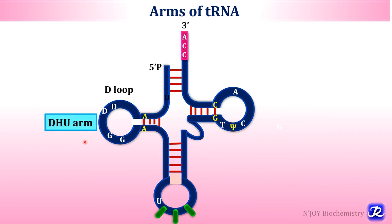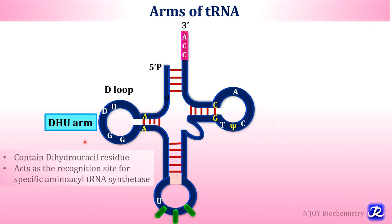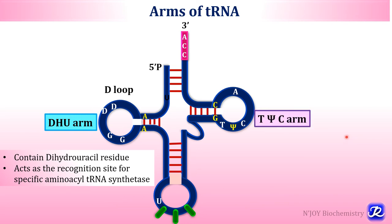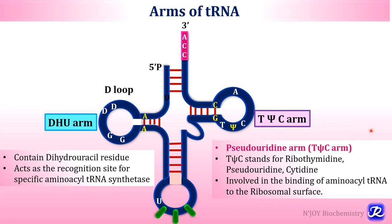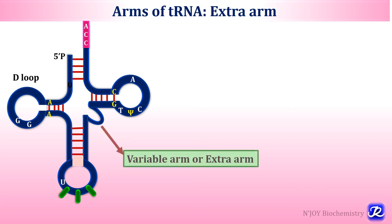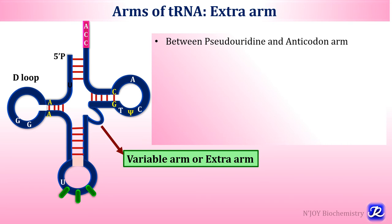The DHU arm, also called the D-arm, contains the modified base dihydrouracil and acts as a recognition site for the specific aminoacyl-tRNA synthetase enzyme. Opposite to the D-arm is the TψC arm, also called the pseudouridine arm. TψC stands for ribothymidine, pseudouridine and cytidine, and this arm is involved in the binding of aminoacyl-tRNA to the ribosomal surface. The fifth arm is the extra or variable arm, present between the TψC arm and the anticodon arm.